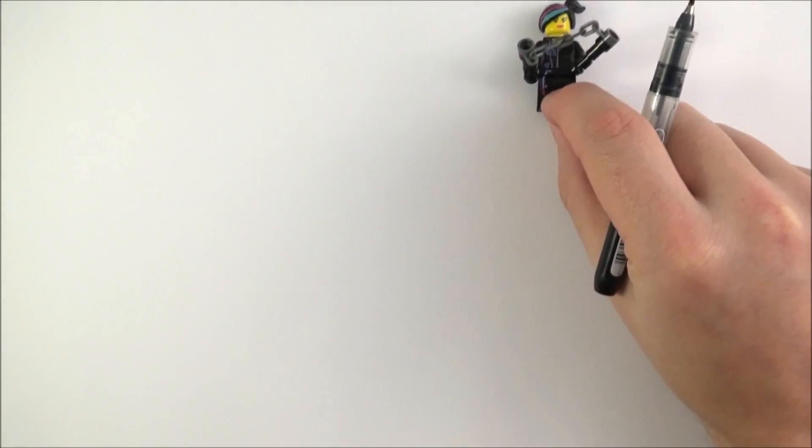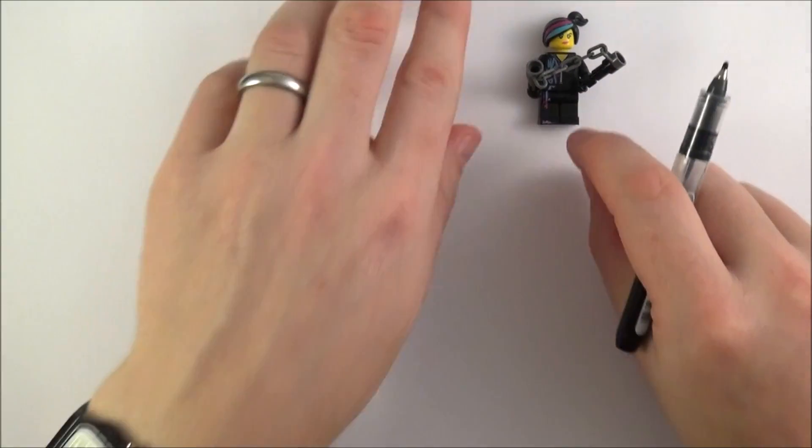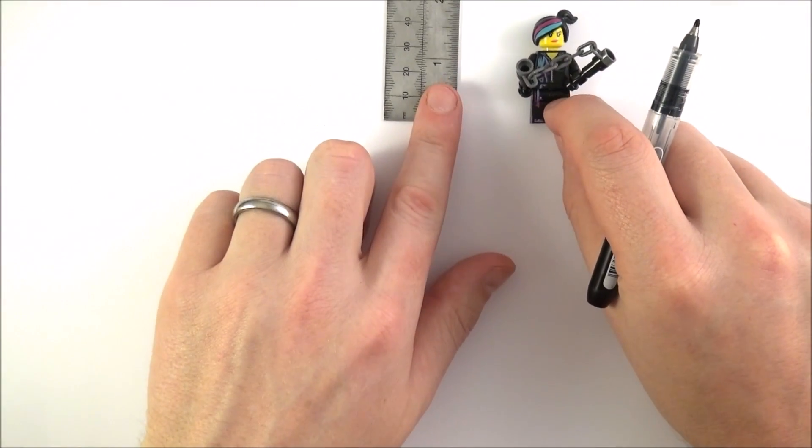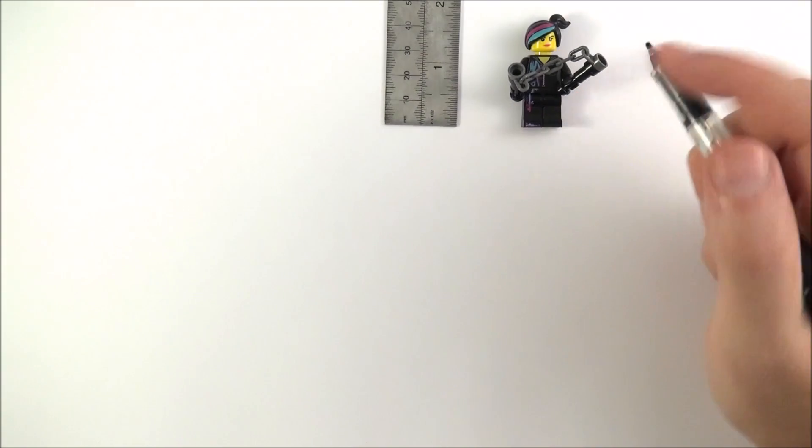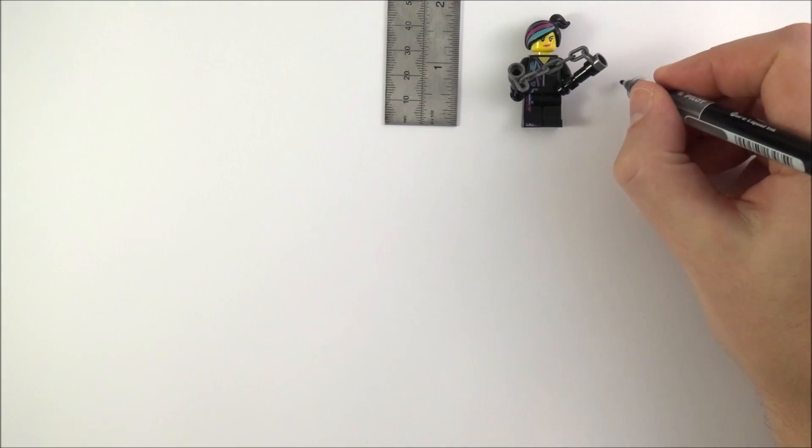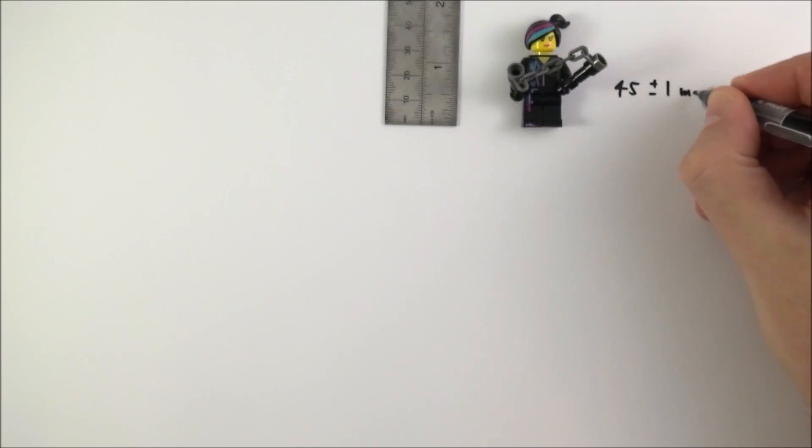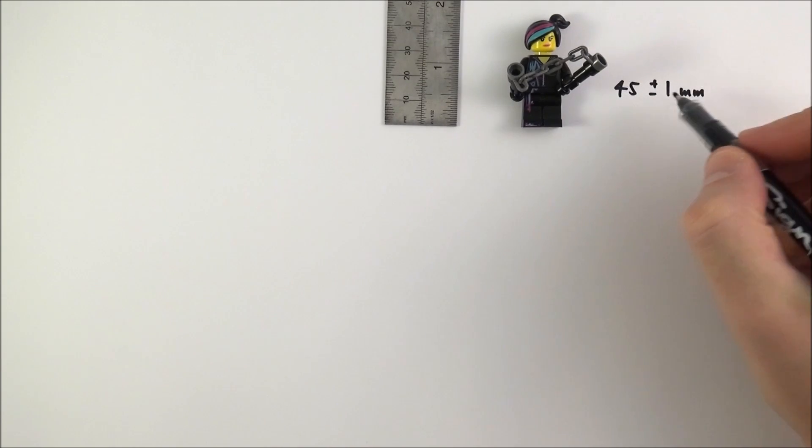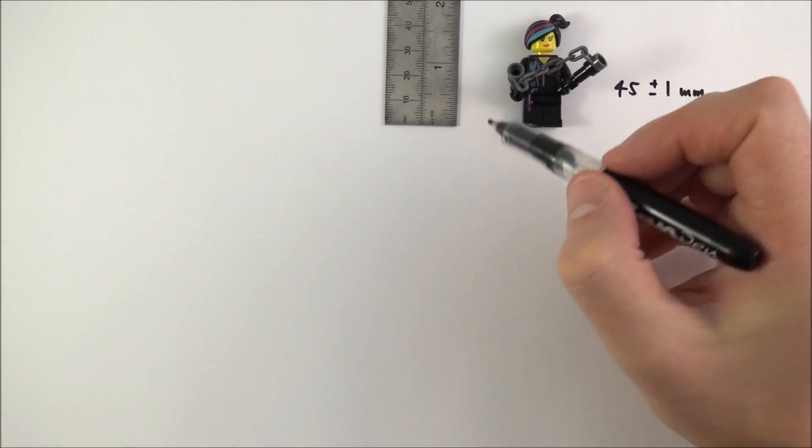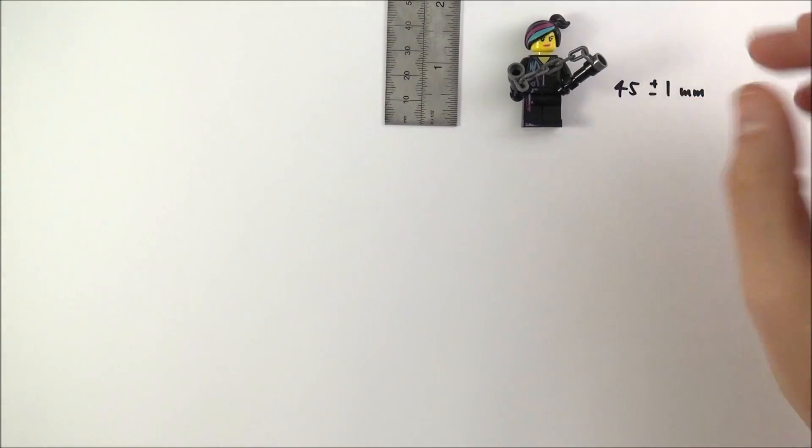Now what I'd like to do is measure the height of various bits of Lego. So what I have here is one figure, and when I measure Wildstyle I find that she's a height of 45 millimeters plus or minus one millimeter. So that is my measured value and that is my uncertainty because I've got the error at the top and the bottom of this figure.